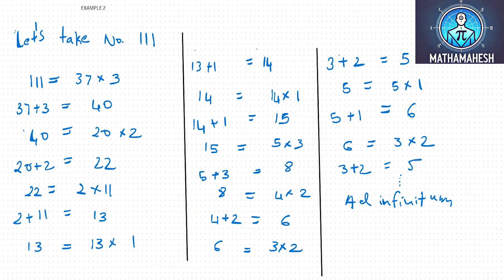8 can be factored as 4 into 2. Now 4 plus 2 is 6. 6 can be factored as 3 into 2. Now 3 plus 2 is equal to 5. 5 is equal to 5 into 1. 5 plus 1 is 6 again. So as you can see, viewers, you always end up with the two digits 5 and 6.